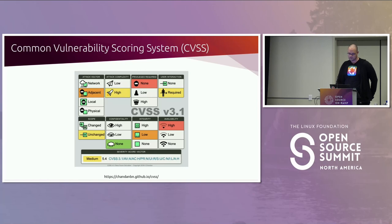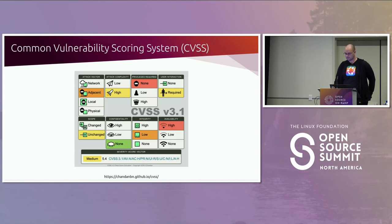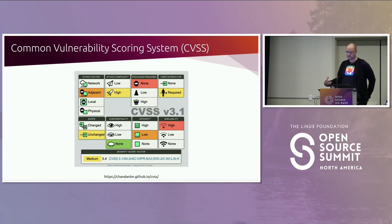In this example, the attack vector is adjacent, meaning the vulnerability is not remotely exploitable over the internet but could be attacked adjacently through wireless or Bluetooth. Part of this example also shows that availability is highly affected, meaning the resource or system could be denied from running. When we tabulate all these metrics, the CVSS score is a 5.4, which we call a medium vulnerability.